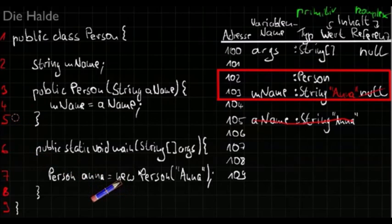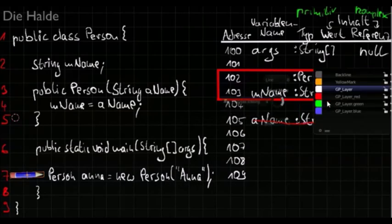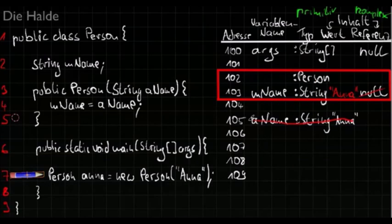After leaving the constructor we go back there. And now we are ready to declare the variable Anna. It gets the address of the new created person object. So we get a new variable called Anna in the memory. And it has the type person.